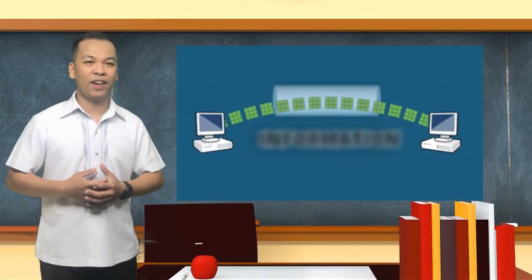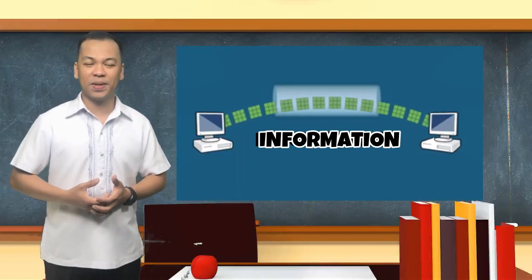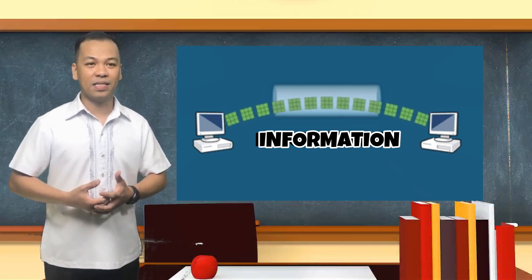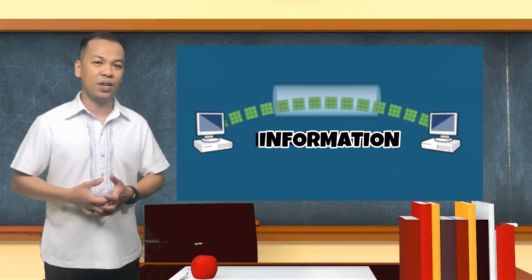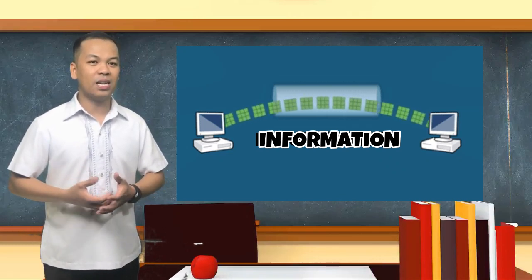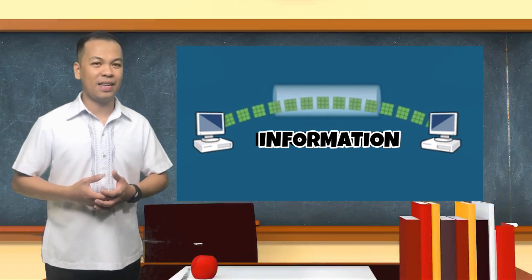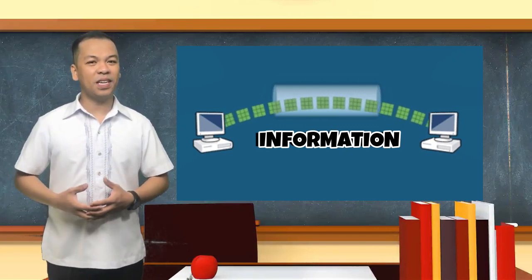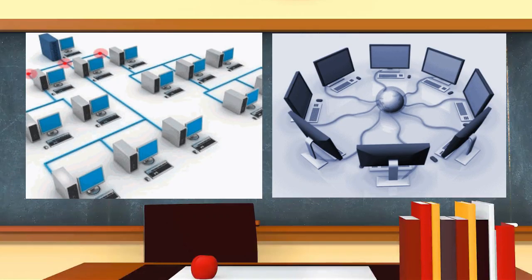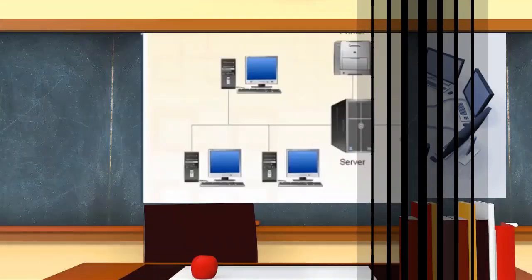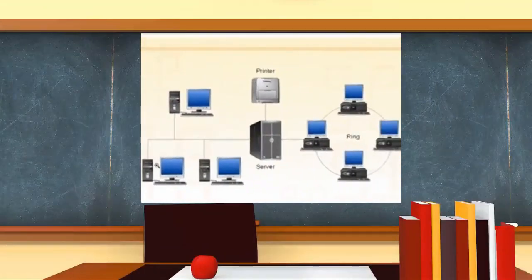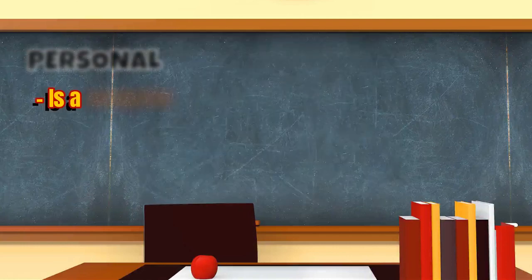Two such devices can be said to be networked together when one device is able to exchange information with the other device, whether or not they have a direct connection to each other. Not all computer networks are the same. The network I'm using to link my laptop to my wireless router, printer, and other equipment is the smallest imaginable. It's an example of what's sometimes called the personal area network.